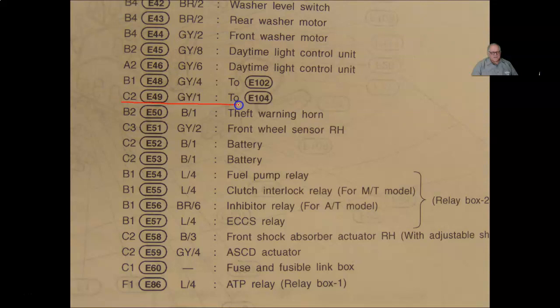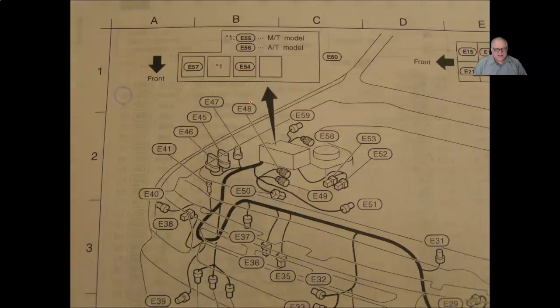Here's the information that I need. E49. Again, it's telling me gray connector single cavity, plugs into E104. Same thing the wiring diagram showed us. Over here, this is actually grid location. I come to this diagram. Here's my C. Just imagine these lines coming straight down, and here's my 2 coming out over here, and there's my E49, that spot right there.